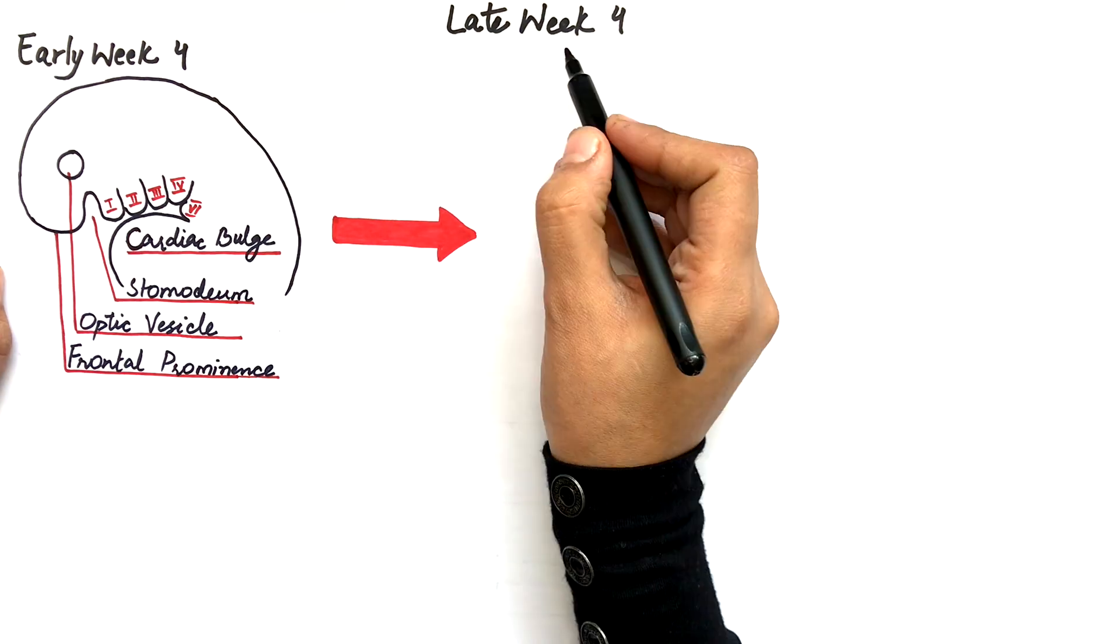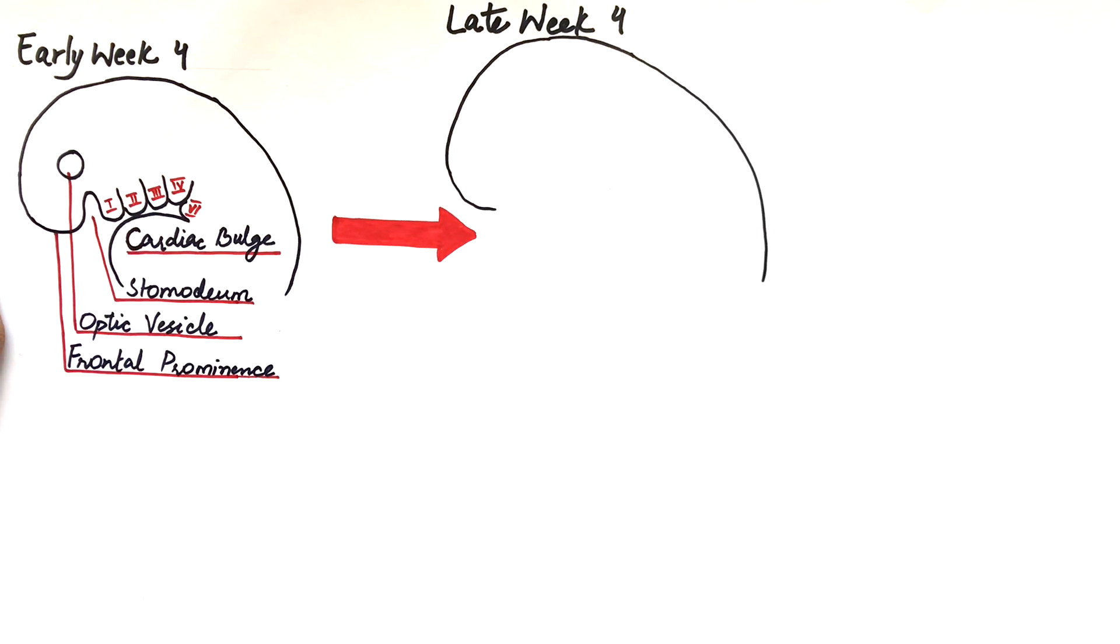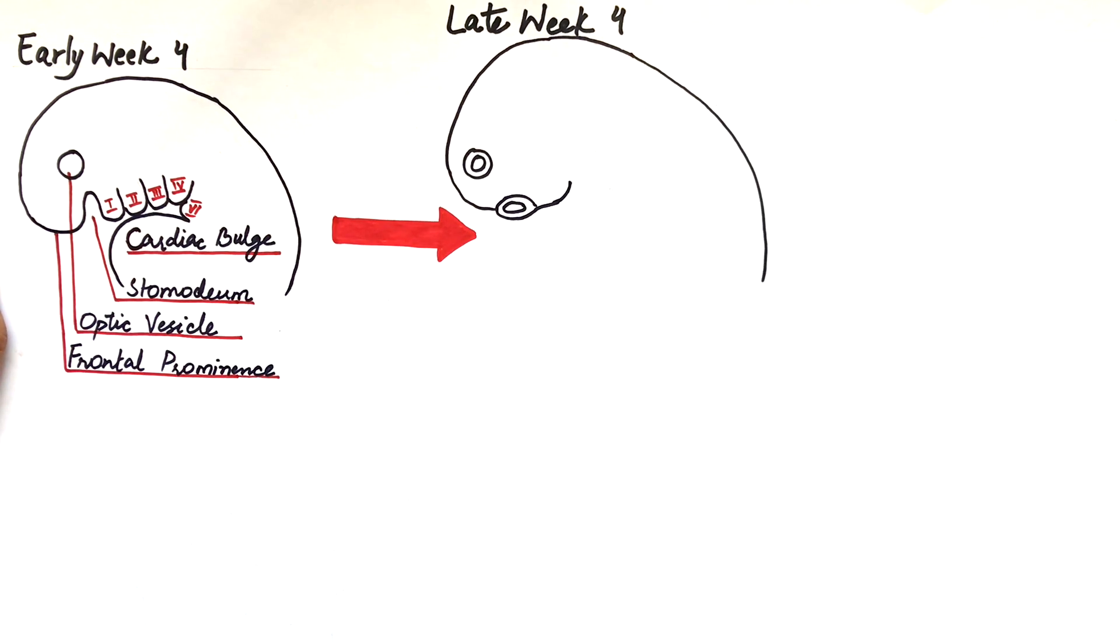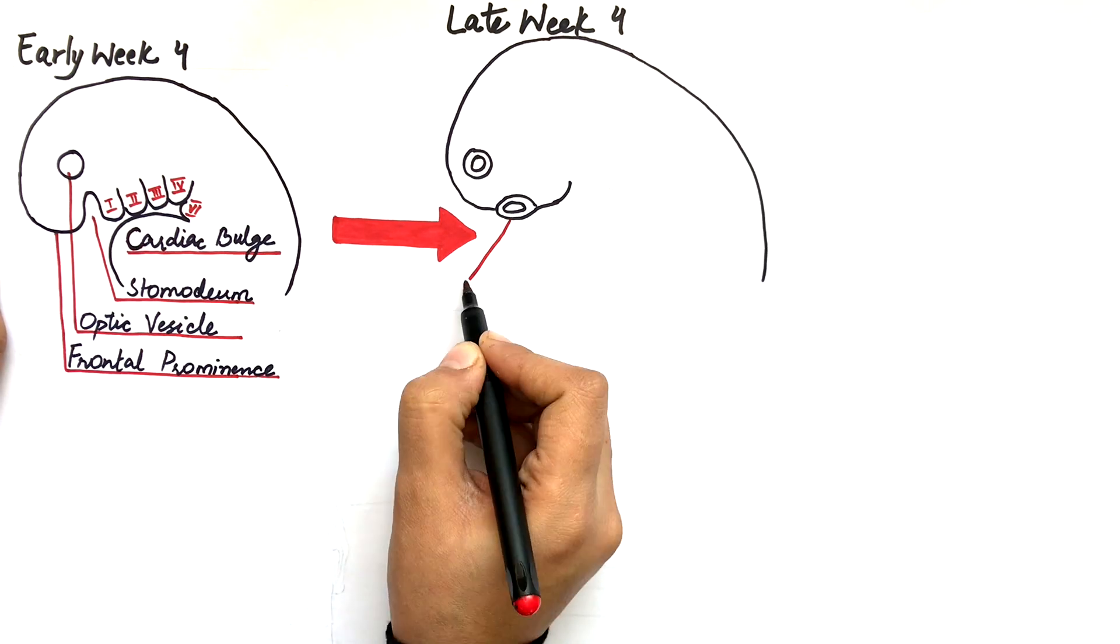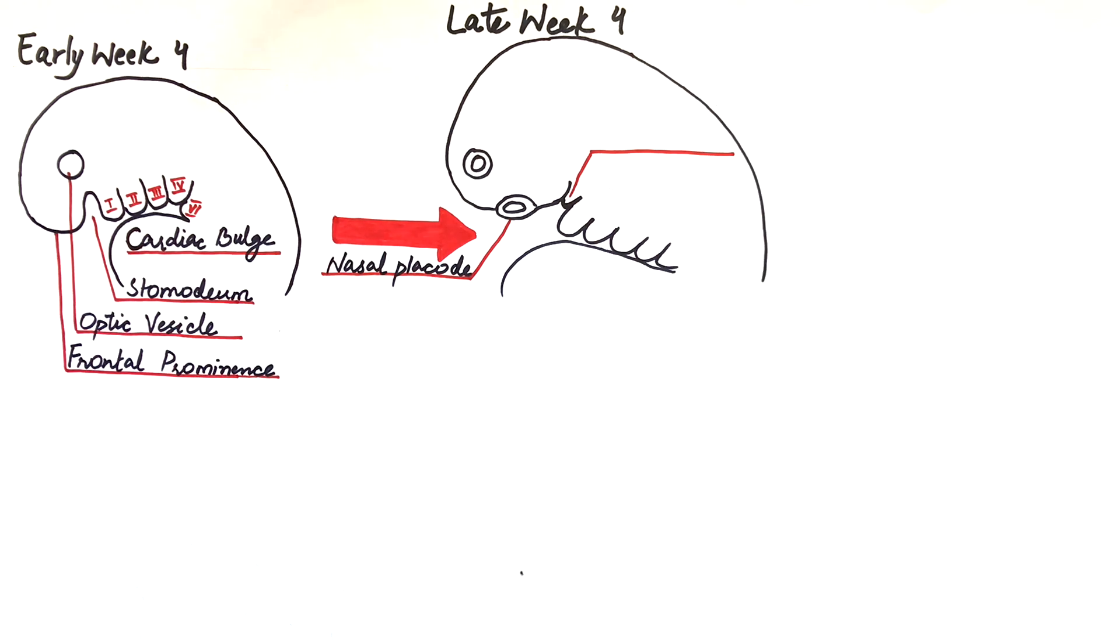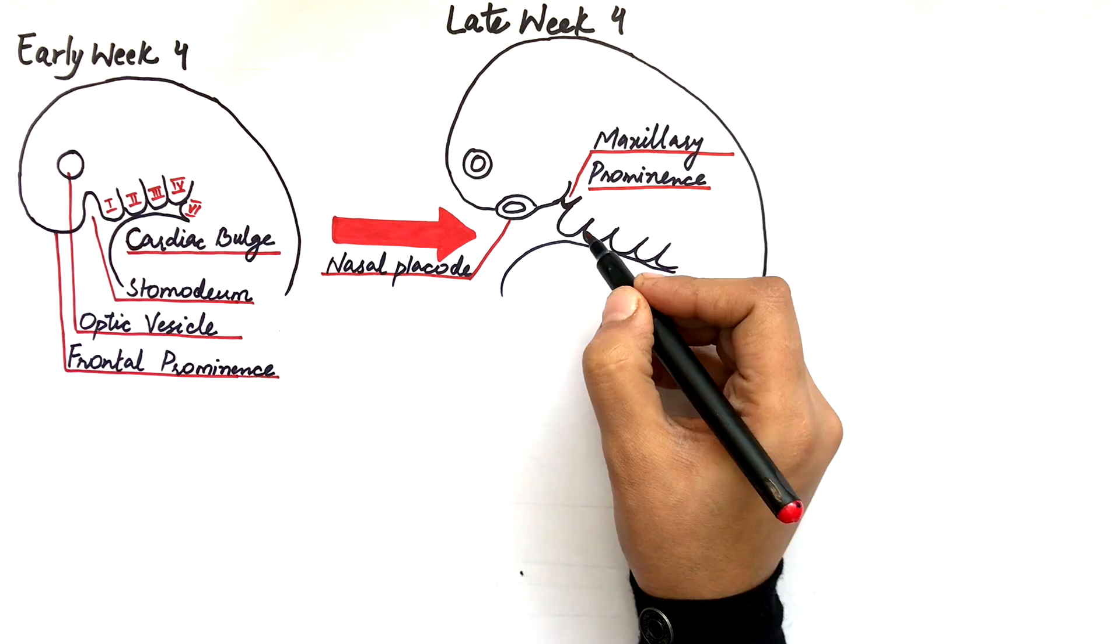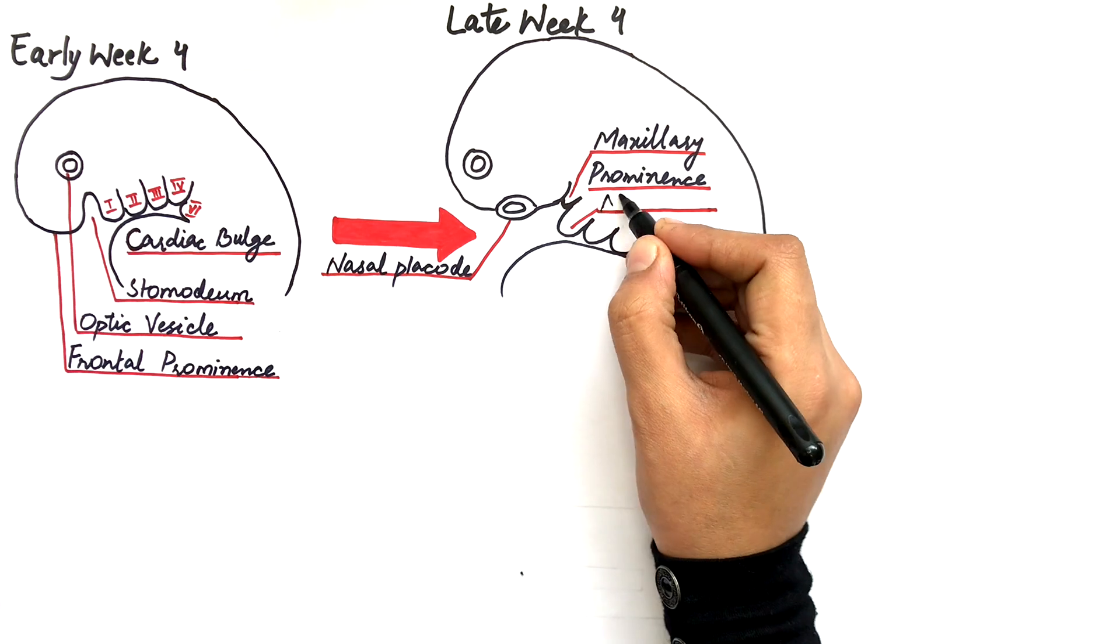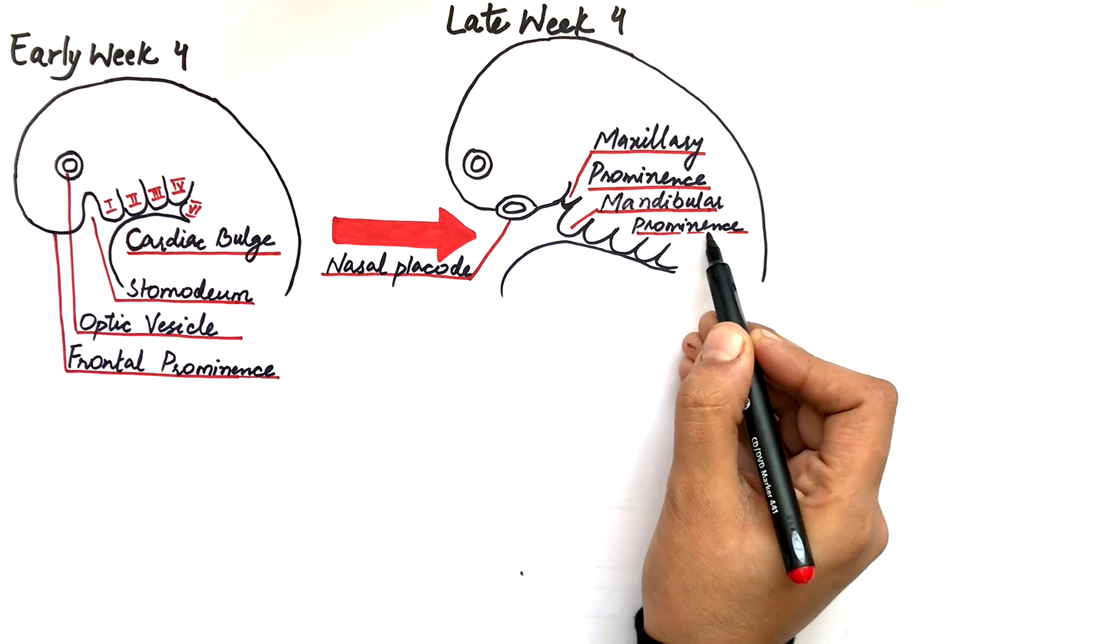By the end of week 4, localized ectodermal thickenings appear on the lateral sides of the frontal prominence. These localized thickenings are called the nasal placodes. At this point, the first pharyngeal arch will develop another prominence called the maxillary prominence, and the part of the first arch itself is now called the mandibular prominence.